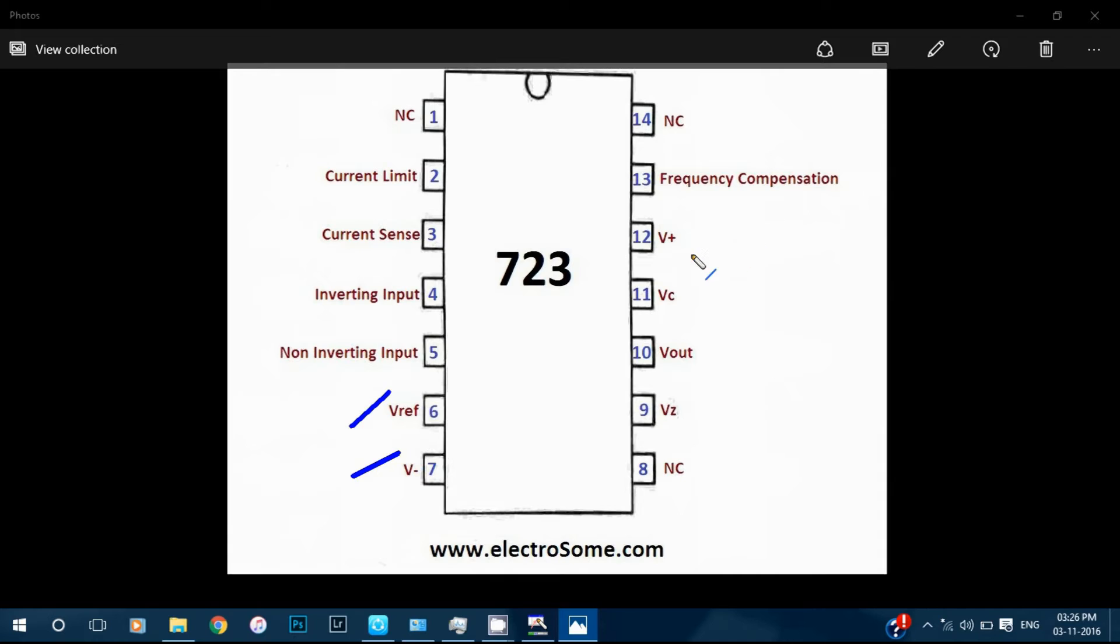The seventh pin is V- and the twelfth pin is V+. These are supply voltage terminals of the IC. V+ is the positive terminal and V- is the negative terminal. The voltage difference between these terminals should be between 9.5 to 40V.